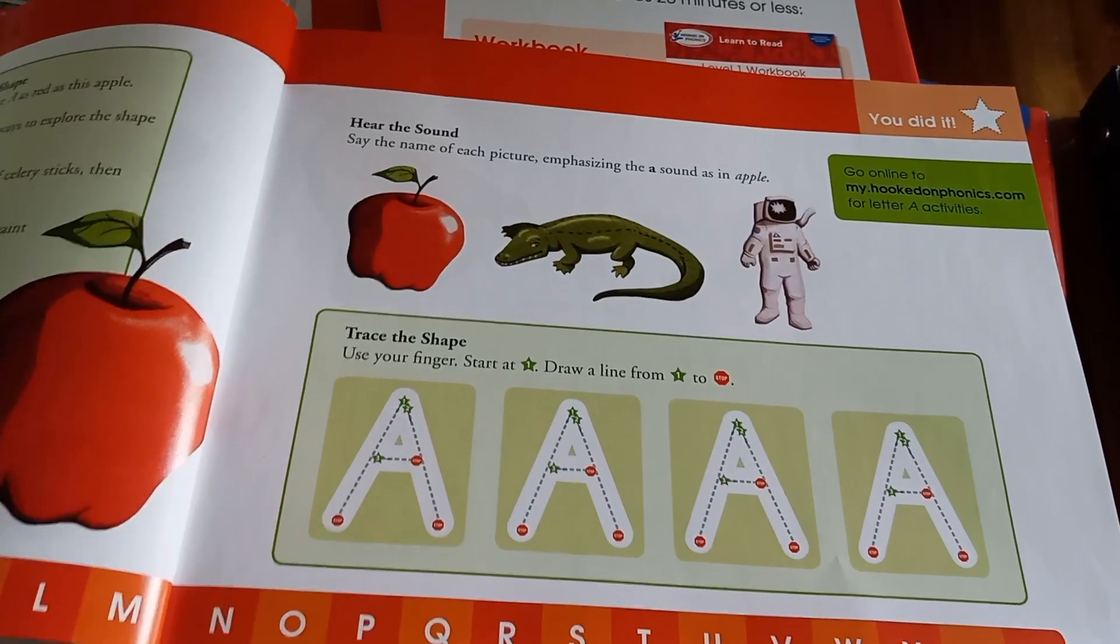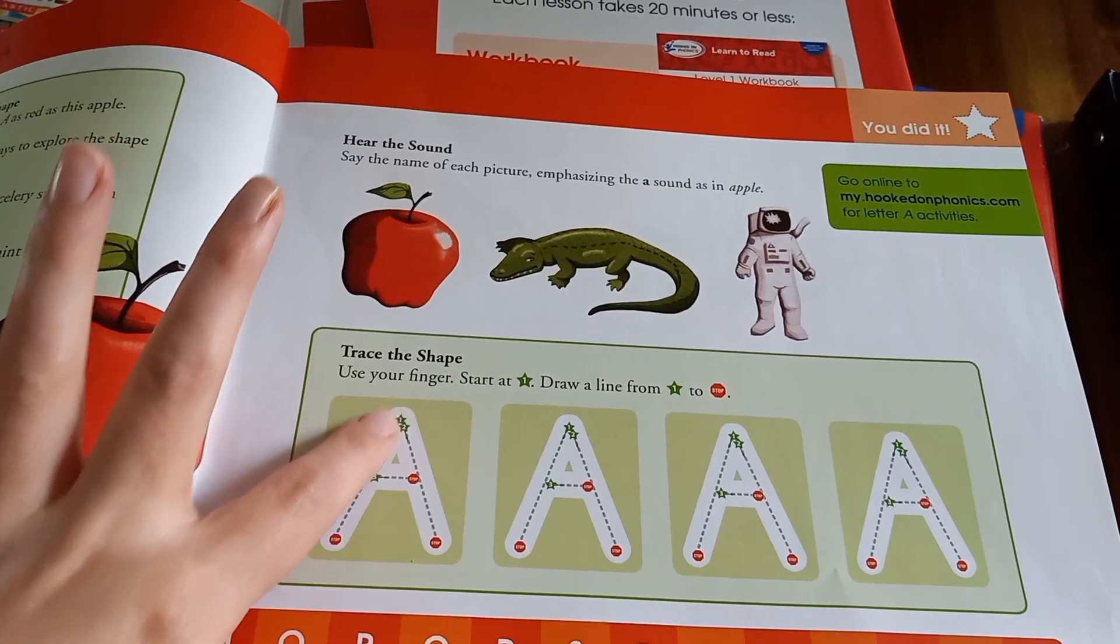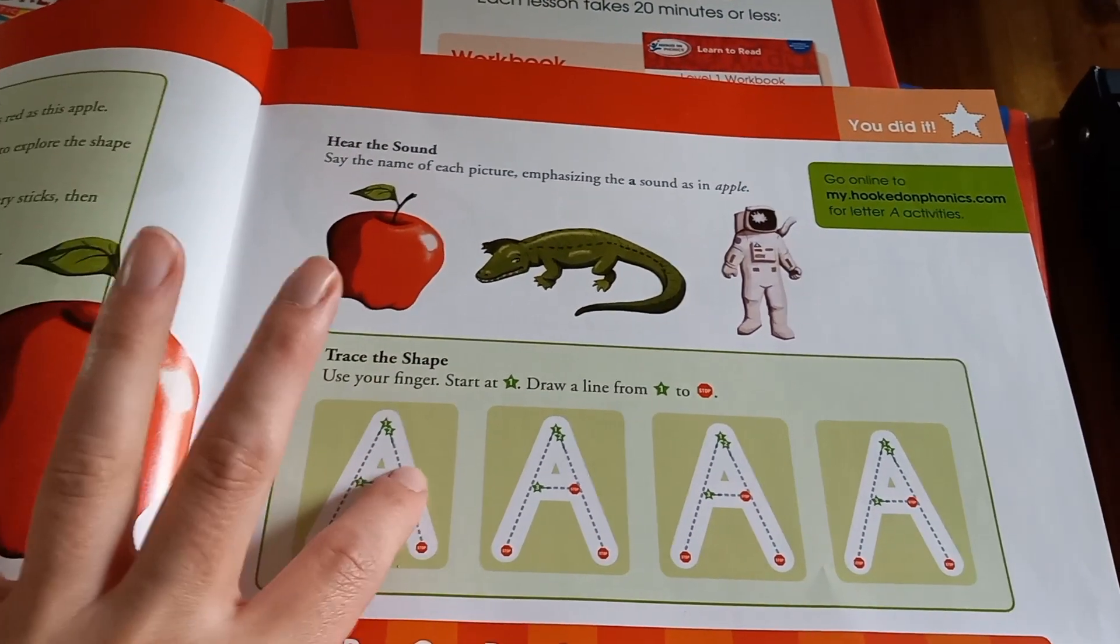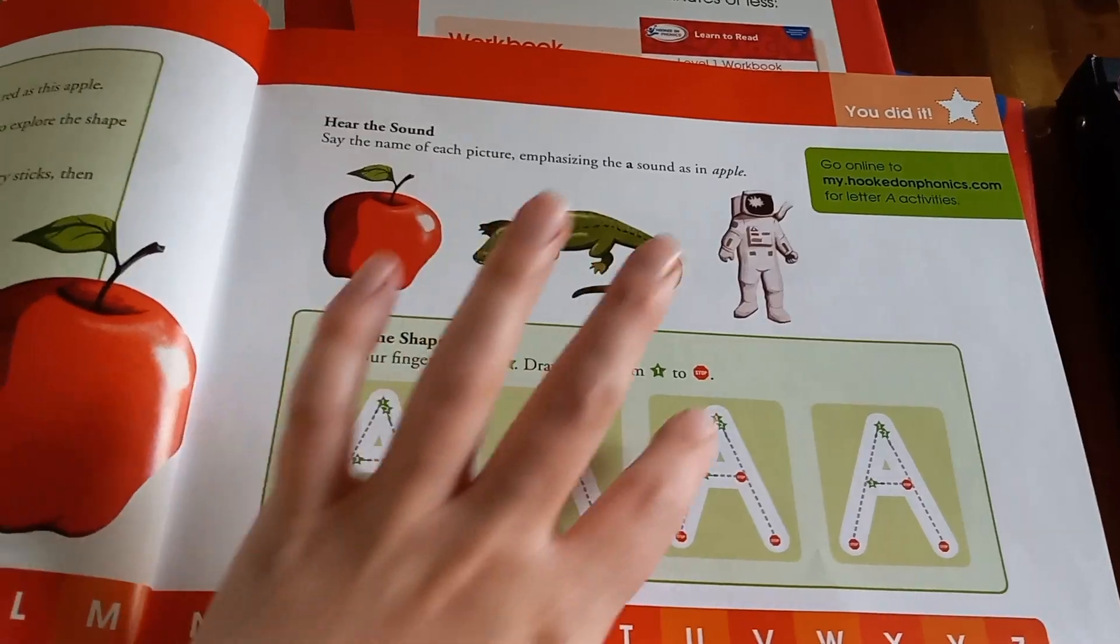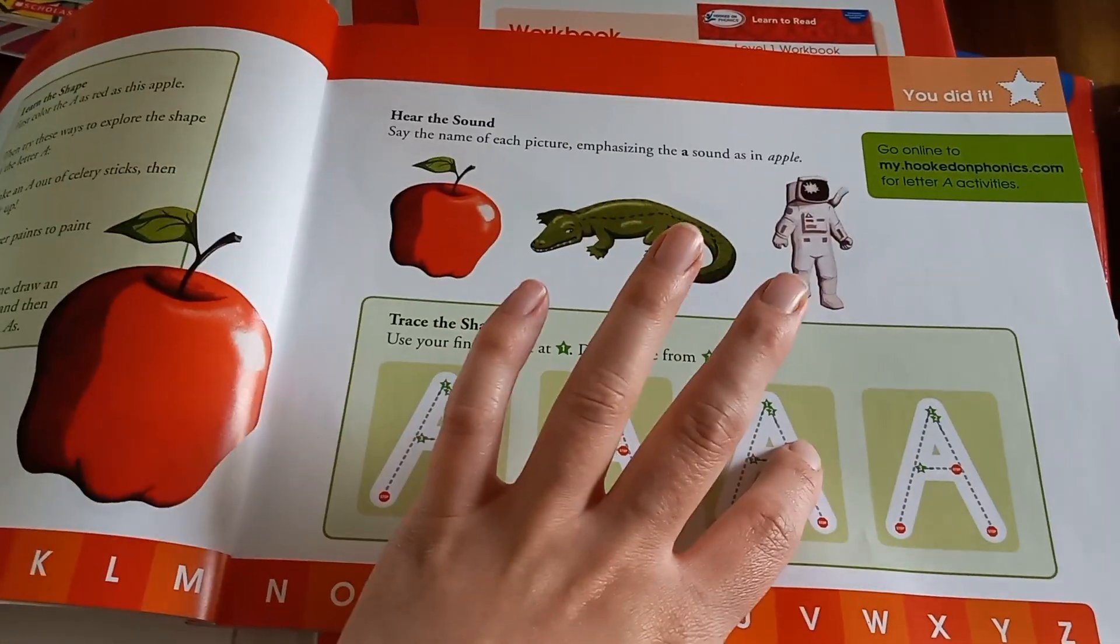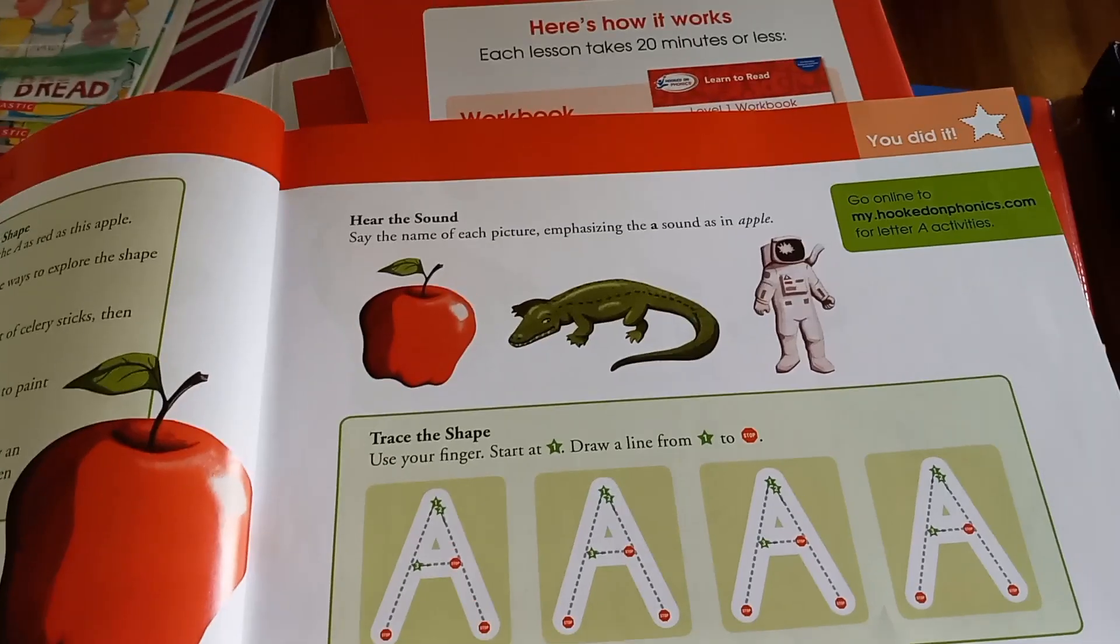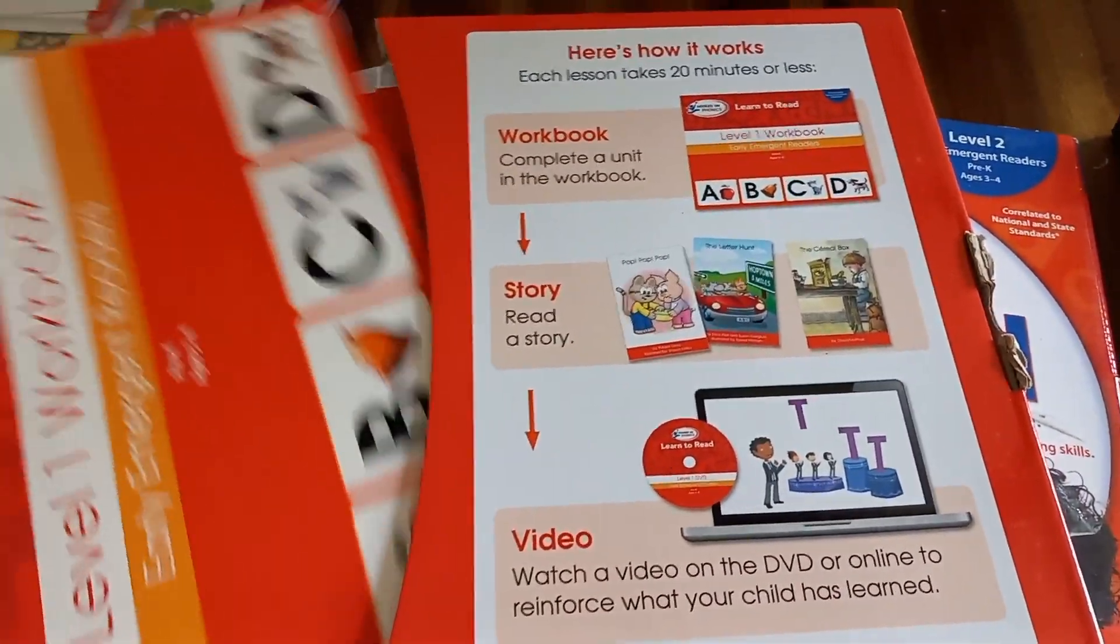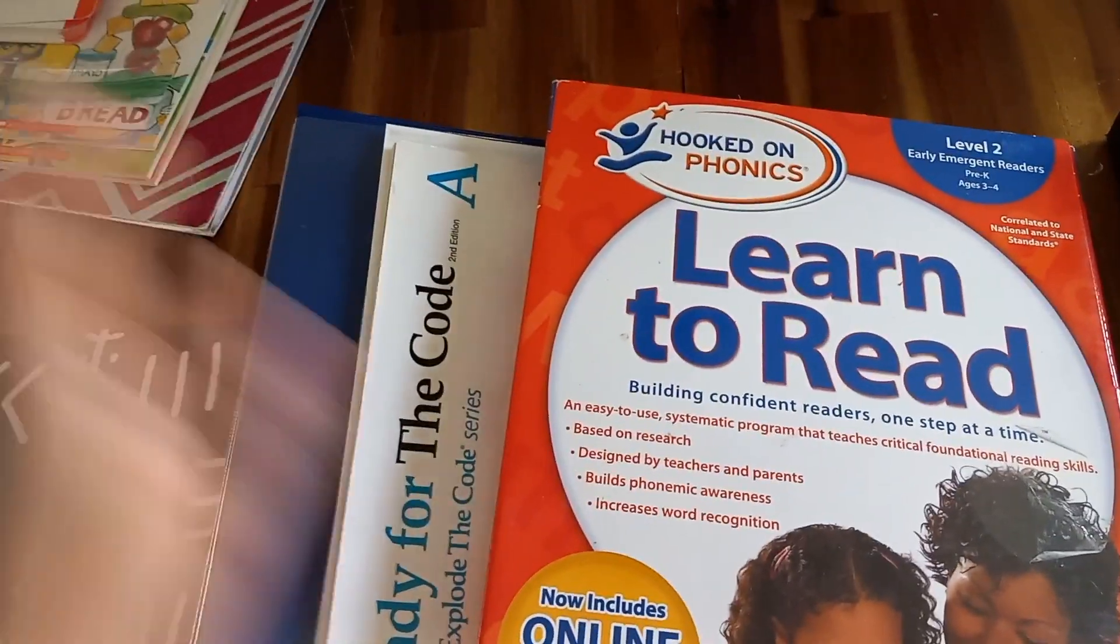And then you have them trace. Now, when they trace, I have them say the letter after they're done. So we do one letter out of this book and then I correlate it with the next items that I'm going to show you. So that's the Hooked on Phonics. And like I said, there's two levels.